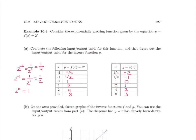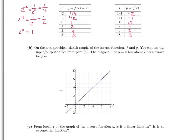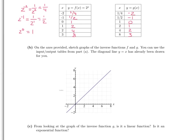So you can see the input-output pairs are reversed in these tables. Now let's have a look at the graphs of these two inverse functions. On the axes provided, sketch the graphs of these inverse functions f and g. You can use the input-output tables from part A to help. The diagonal line y equals x has already been drawn for you.